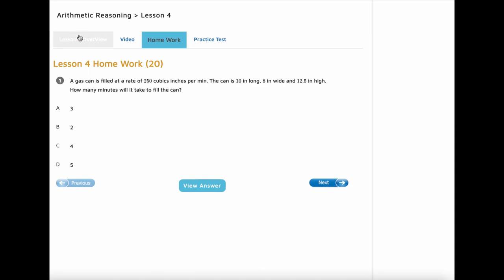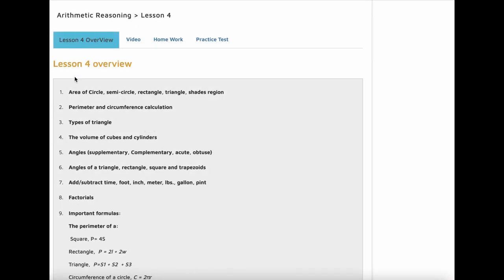In geometry, you need to study how to find area of a circle, semicircle, rectangle, triangle, and shaded region. Perimeters, circumference. Learn different types of triangle. Learn how to find the volume of cube and cylinders. Learn how to calculate angles, supplementary angle and complementary angle, acute angle, obtuse angle. Learn how to do factorials.